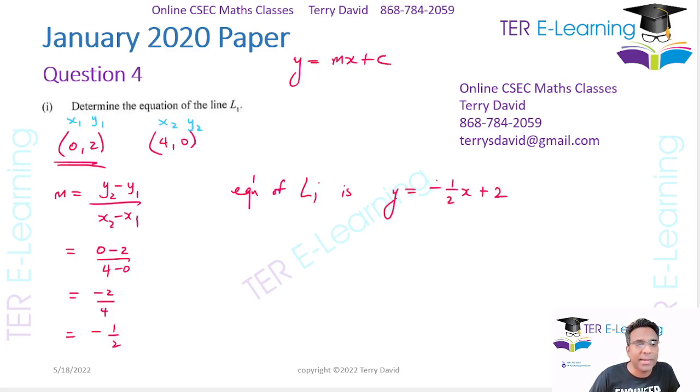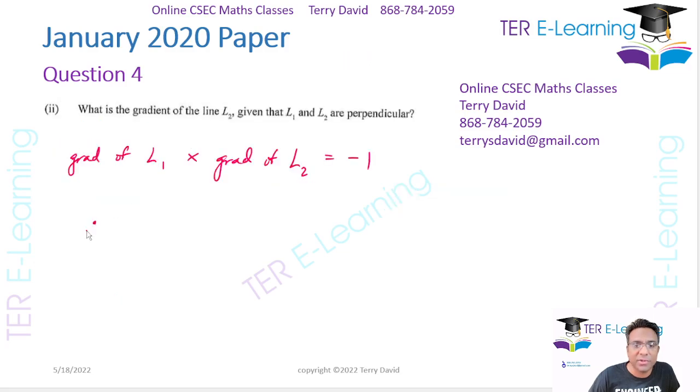Now, you know what L1 is. L1 is minus a half. So therefore, the gradient of L2. So what I normally tell students, we know that L1 is minus a half. So I usually tell my students invert. So it's going to be 2 over 1. And then we have to put a minus sign in front of it. So when I work this out here, I'm going to get my gradient of L2 being 2.